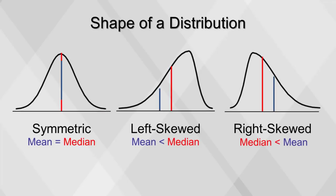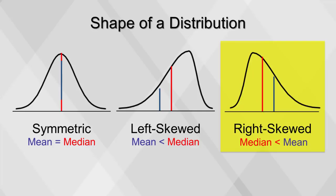The first thing we're looking for in any continuous variable is the shape of distribution — what are the boundaries of the data points, and how are they clustered? If a few small values are mixed in with the majority of values being much higher, the data will have a left or negative skew. Likewise, if we have some large values mixed in with the majority of small values, the distribution will have a right skew, or positive skew. If the distribution is balanced, it is symmetric.